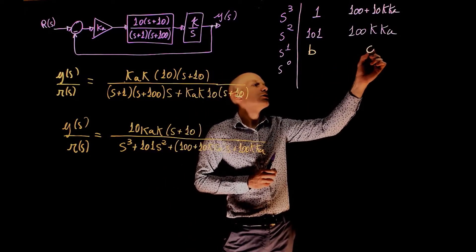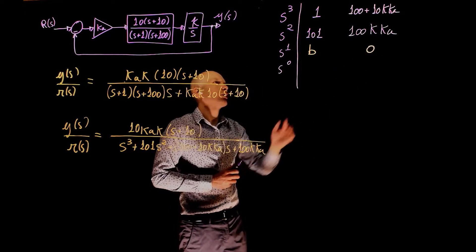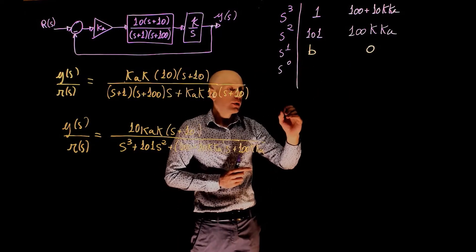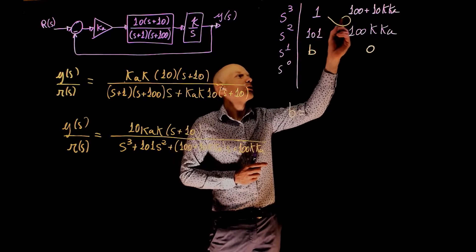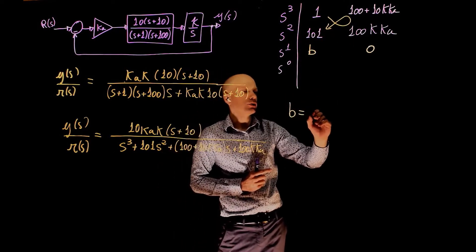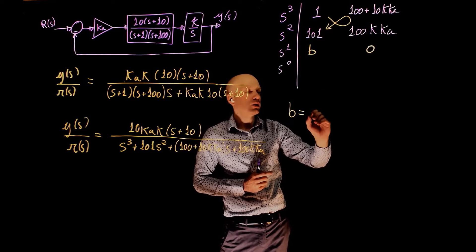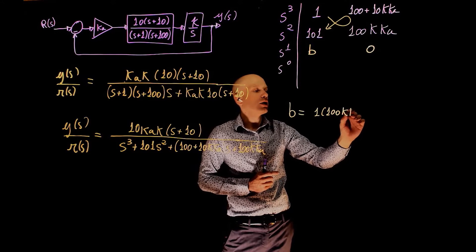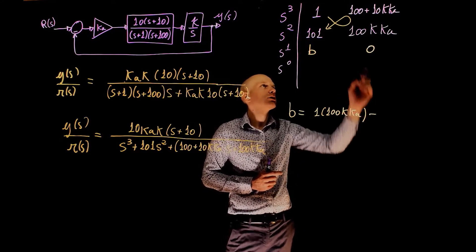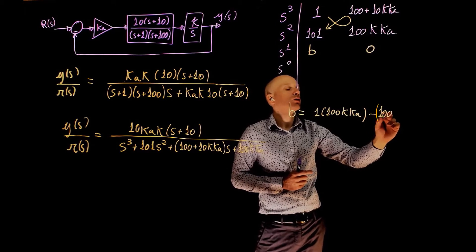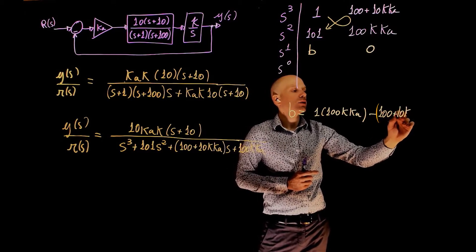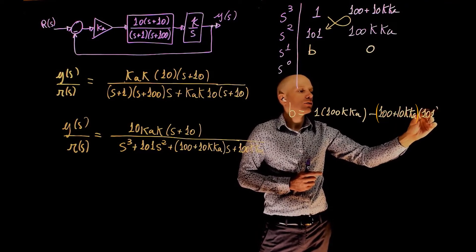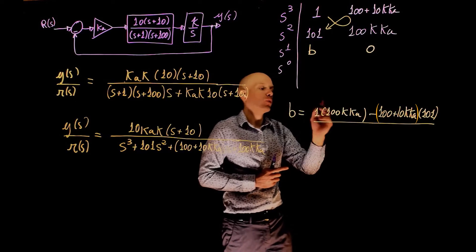And you know that this element here is 0, right. 1 times 0 minus 0 times 101 is 0. And b, in this case, is the multiplication of these 4 elements, that is 101 times 100kka minus 100 plus 10kka times 101, all divided by 101.